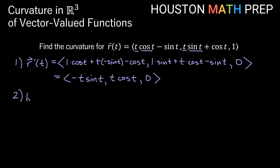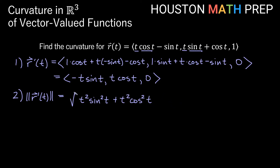The next step is to find the magnitude of r-prime of t — the square root of all components squared. Squaring gives t² sin²t plus t² cos²t plus 0. This is t² times a Pythagorean identity, so t² times 1 = t², and the square root of t² is the absolute value of t. If we assume t is not negative, we can say this is just t. So the magnitude of r-prime is t (with the note that if t could be negative we'd need absolute value of t).